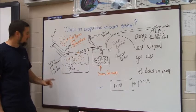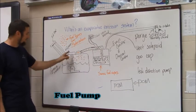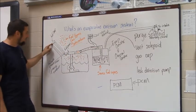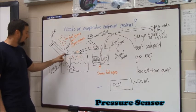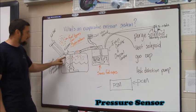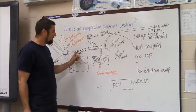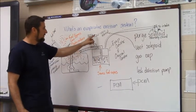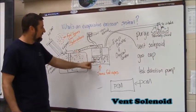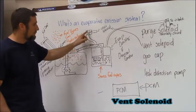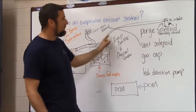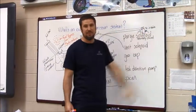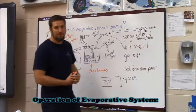First, we've got a gas tank with a fuel pump and a filler neck with a fuel cap. We've got a fuel tank pressure sensor that monitors pressure in the tank, vapor lines from the fuel tank to the charcoal canister, a vent solenoid that prevents pressure from building in the system, and a vapor line to our purge solenoid which leads to the engine.